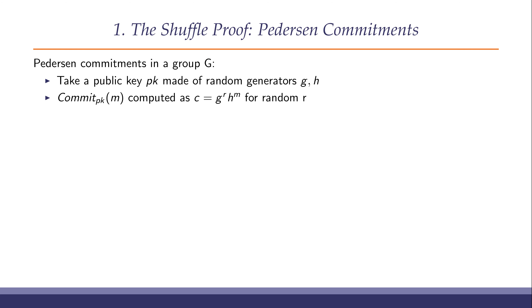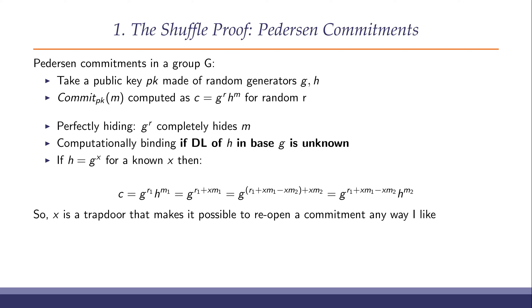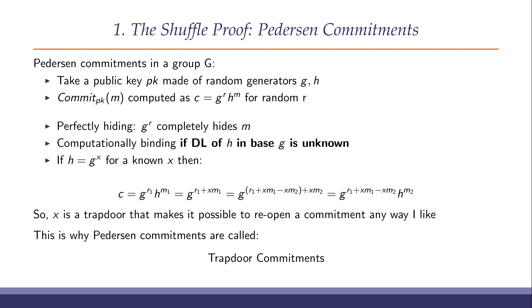Cytel and SwissPost implemented this commitment scheme using Pedersen commitments. You take a public key made of two random generators, g and h, and a commitment simply consists of generating some random value r and computing g to the power of r times h to the power of the message you want to commit to. This is perfectly hiding, and it's computationally binding assuming that it's hard to compute the discrete log of h in base g. It's equally obvious that this is necessary: if you do know that h equals g to the x for some x, then you can easily open any given commitment any other way you'd like.